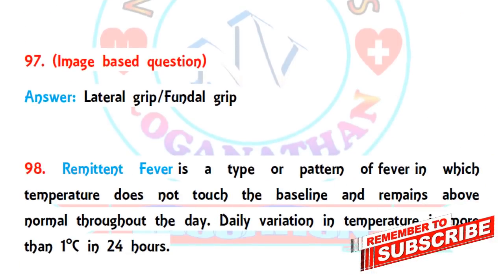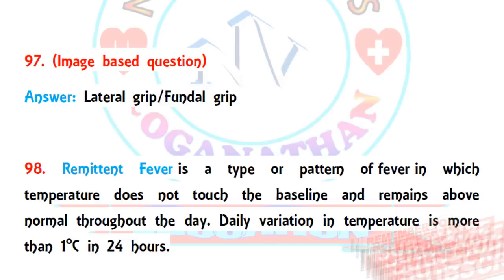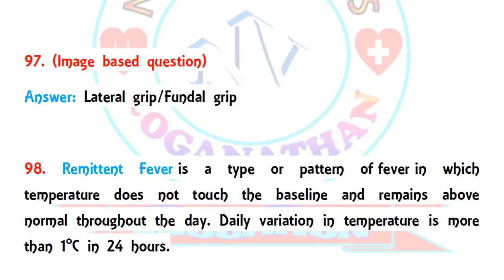Question 97 is an image-based question related to obstetrics and gynecology — mainly fetal assessment. The type of image shown is not entirely certain, but it may be a lateral grip or fundal grip shown in the second shift examination.